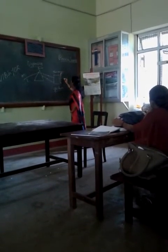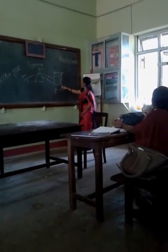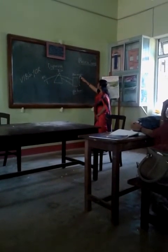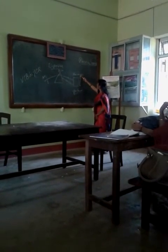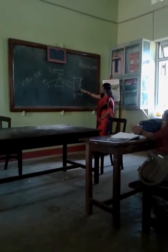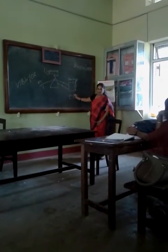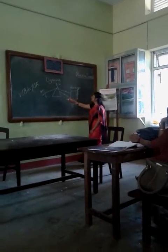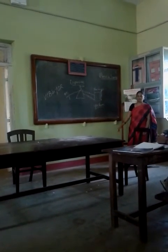Violet is found at the lowest position, while red light is found at the highest position. So, red light has the longest wavelength and violet has the shortest wavelength. This is how white light is split into its constituent colors.